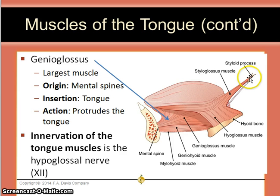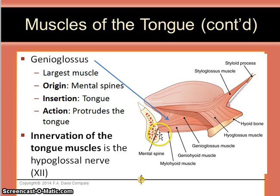To summarize: styloglossus — styloid to tongue; hyoglossus — hyoid to tongue; genioglossus — genial tubercle to tongue; mylohyoid — mylohyoid line to the hyoid bone. Innervation of the tongue muscles is via the hypoglossal nerve, cranial nerve 12.